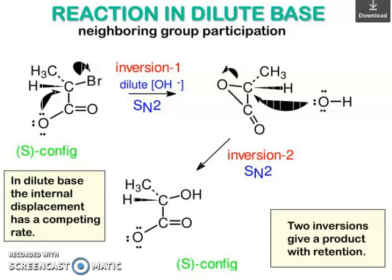In dilute base, neighboring group participation is enabled. In dilute OH⁻ (SN2), starting from S-configuration, the internal displacement by the carboxylate oxygen has a competing rate. You can see the oxygen approaching the carbon where the leaving group is present — S-configuration. This forms a three-membered ring intermediate (inversion 1, SN2), then external OH⁻ attacks again (inversion 2, SN2), giving S-configuration to S-configuration. Two inversions give a product with retention of configuration.